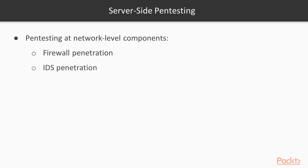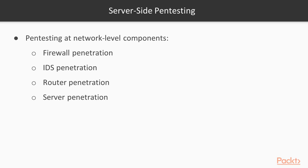The IDS — intrusion detection system — is always available at the server-side, so IDS penetration is server-side pentesting. Router pentesting: a router is also available on the network side, so if you try to penetrate a router, it is called server-side pentesting. If you have a server and try to pentest it to find loopholes or weaknesses, that is also considered server-side pentesting. These are the most common components in server-side pentesting, though others are also available.